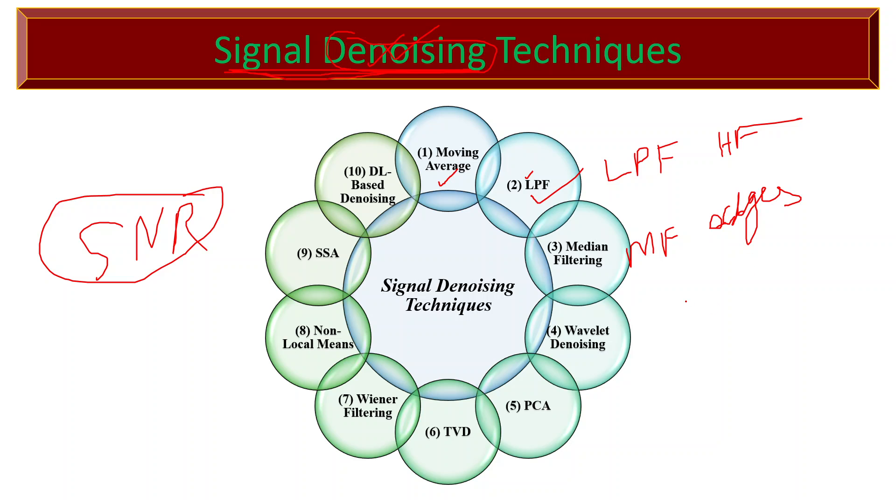Wavelet denoising utilizes properties of the wavelet transform to decompose a signal into different frequency components. The noisy coefficients are then selectively thresholded and filtered, reconstructing the denoised signal.